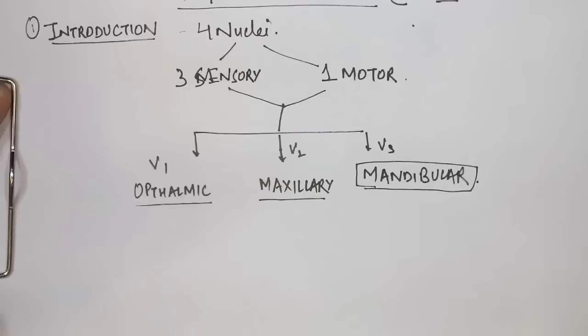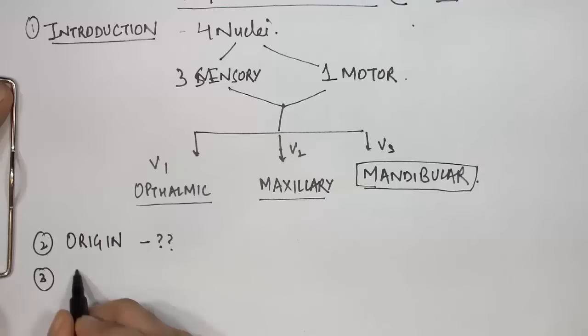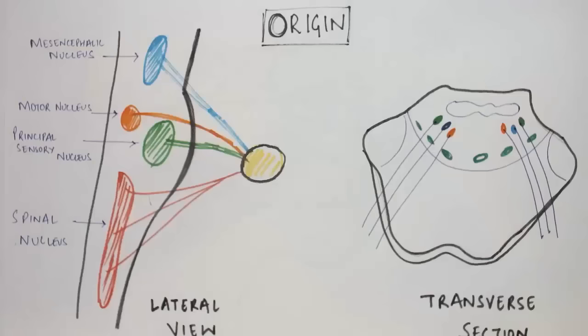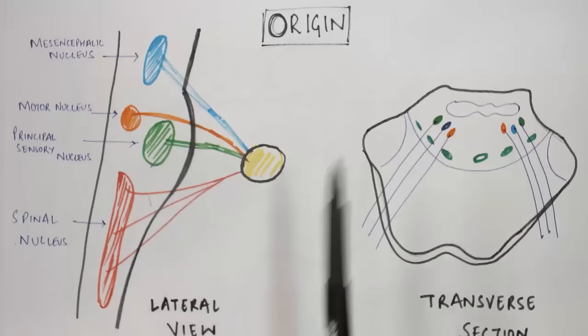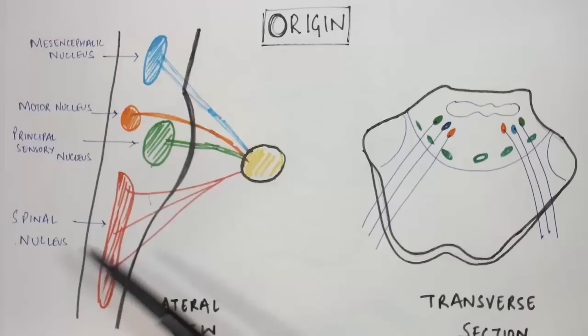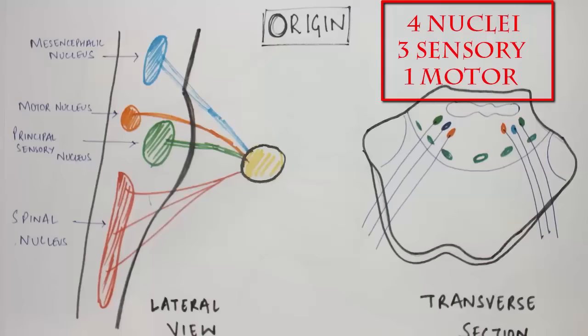In the next section we will study how the trigeminal nerve originates, and then we will study the course and distribution of its branches. Coming to the origin of the trigeminal nerve, I have drawn two views: first is the lateral view and second is the transverse section of the pons. The trigeminal nerve arises from four nuclei — three sensory and one motor nucleus.